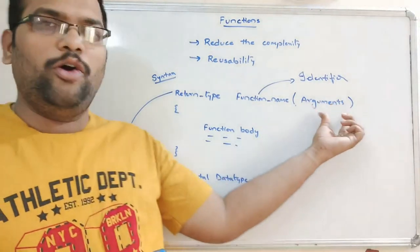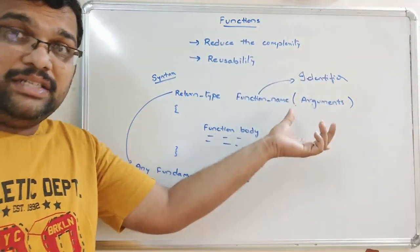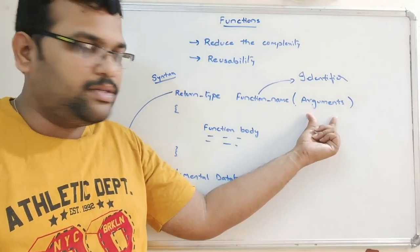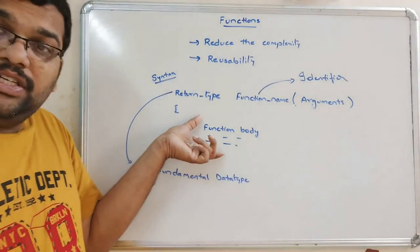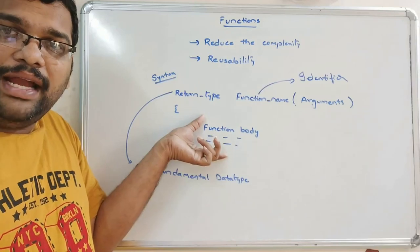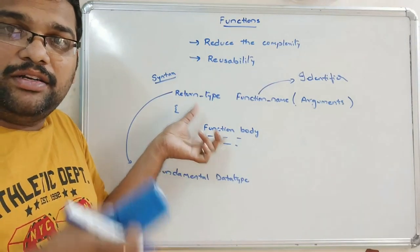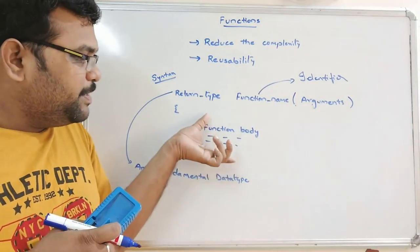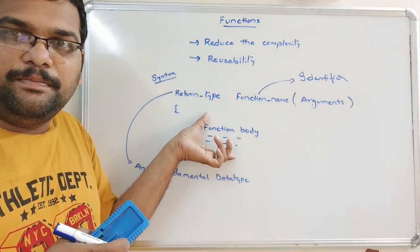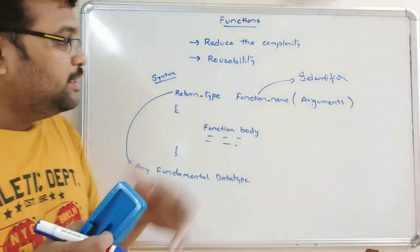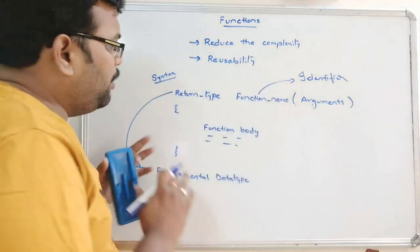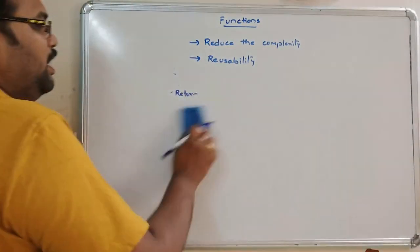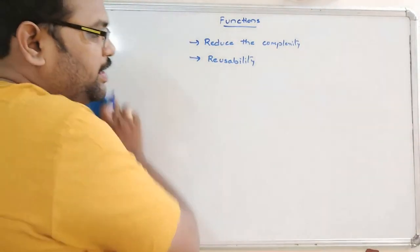Arguments or parameters are optional — we will see the categories of functions in the next session. The function body is where the actual logic is written. Whatever statements are to be implemented when this function is called, those statements should be written in the function body.